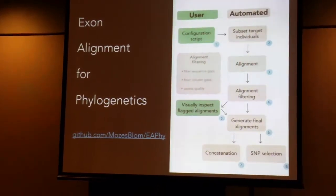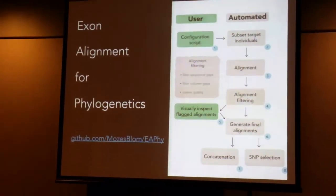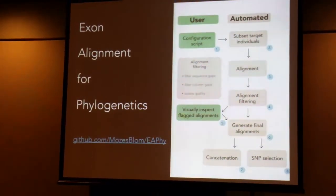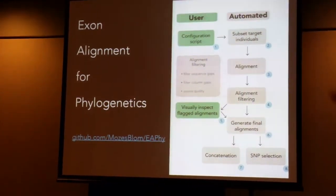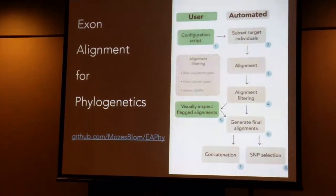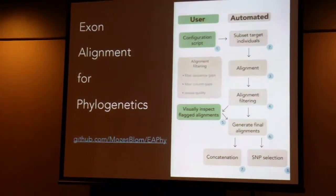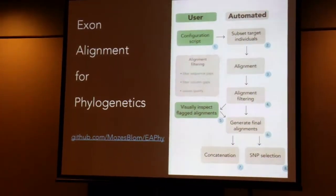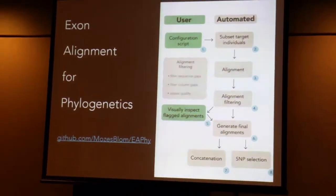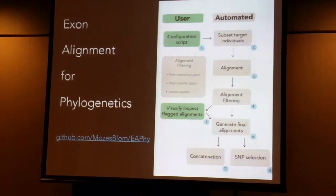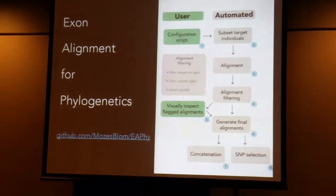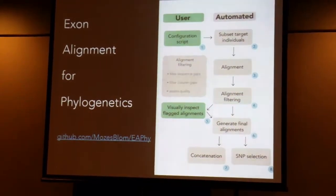In Sanger data, what we did was generate alignments and then do a visual inspection of all those alignments. With 1,500 to 3,000 loci, this is very challenging and takes a lot of time. So we tried to set up a pipeline that actually used the protein-coding character of exons and did a quality control based on the protein-coding sequences.